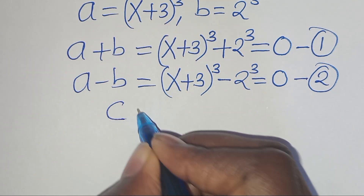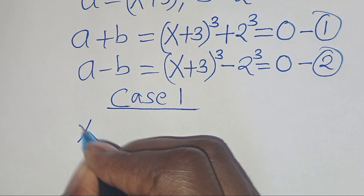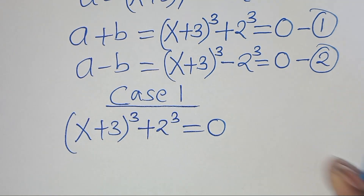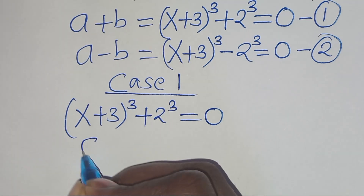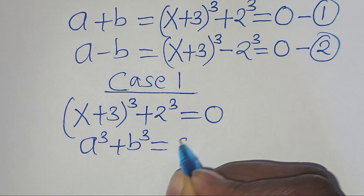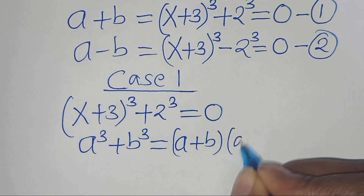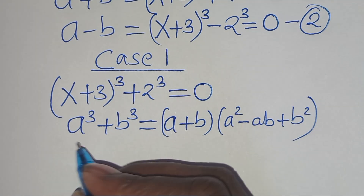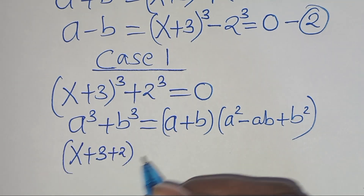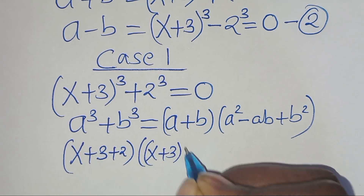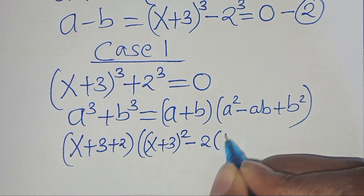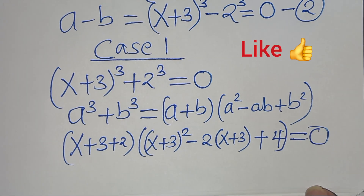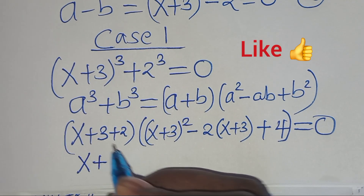Now let's start with equation 1, let's call this case 1. We have x plus 3 raised to the power of 3, plus 2 to the power of 3, equal to 0. This equation is in the form of a to the power of 3 plus b to the power of 3, which we can express as a plus b, times a squared minus ab plus b squared. So here we have x plus 3 plus 2, which is 5.